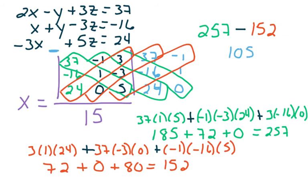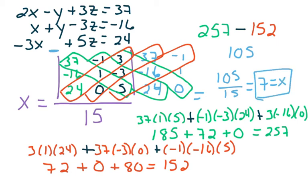Taking that number: 257 minus 152 gives a result of 105. Remember, that's the value in the numerator. So we have 105 divided by 15 to get our x value. 7 equals x.